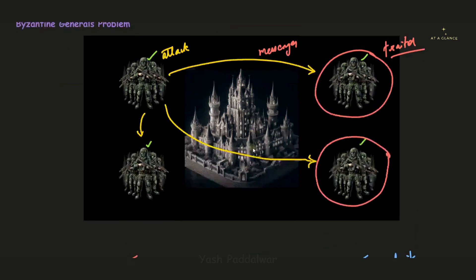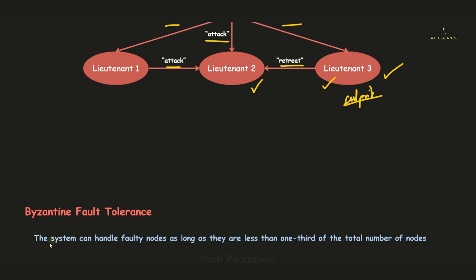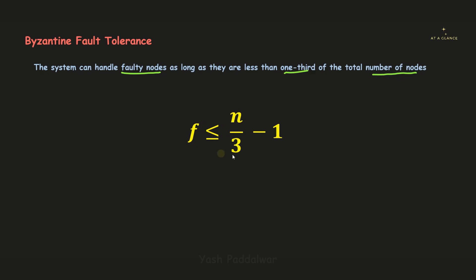Now let's move on to Byzantine Fault Tolerance — the solution to this problem. Byzantine Fault Tolerance states that a system can handle faulty nodes as long as they are fewer than one-third of the total number of nodes. If faulty nodes exceed one-third of the total, the system will fail. This can be represented by the formula: f ≤ (n/3 − 1), where f is the total number of faulty nodes and n is the total number of nodes in the system.